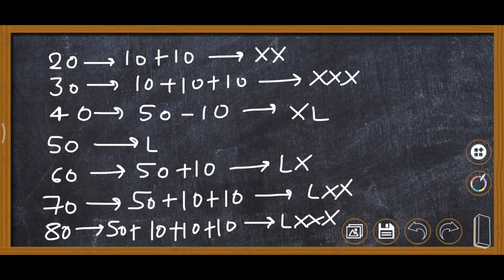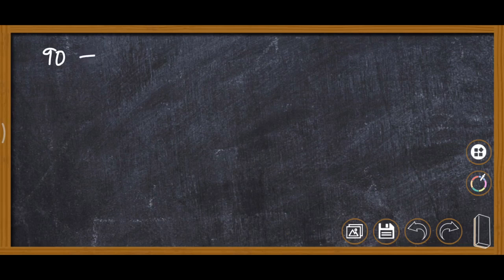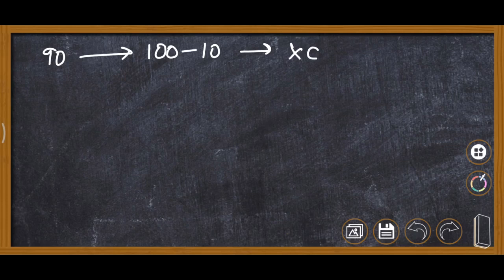For 90, we again cannot add 10 four times. So we use 100 minus 10, applying the subtraction rule. The symbol for 10, which is X, comes first, and 100, which is C, comes after — so 90 is written as XC.